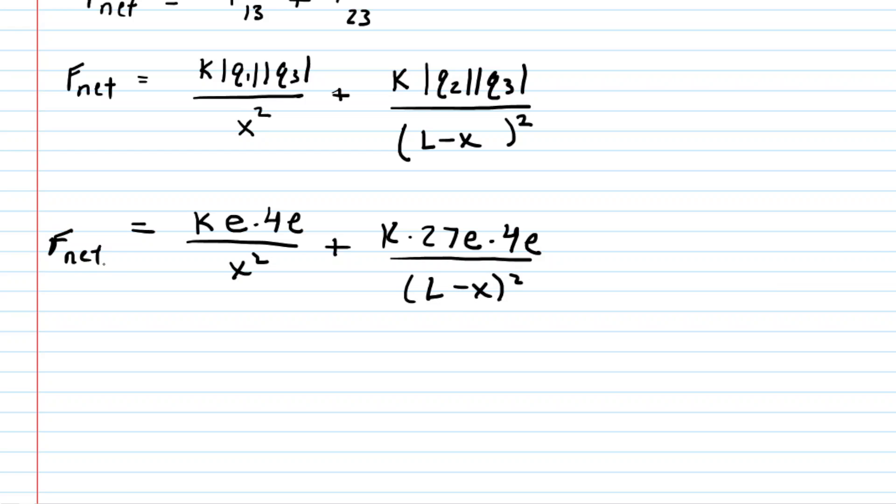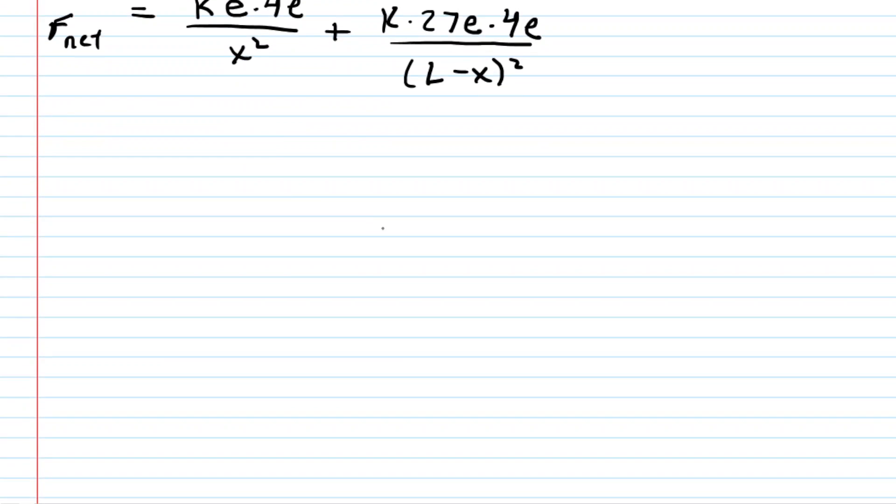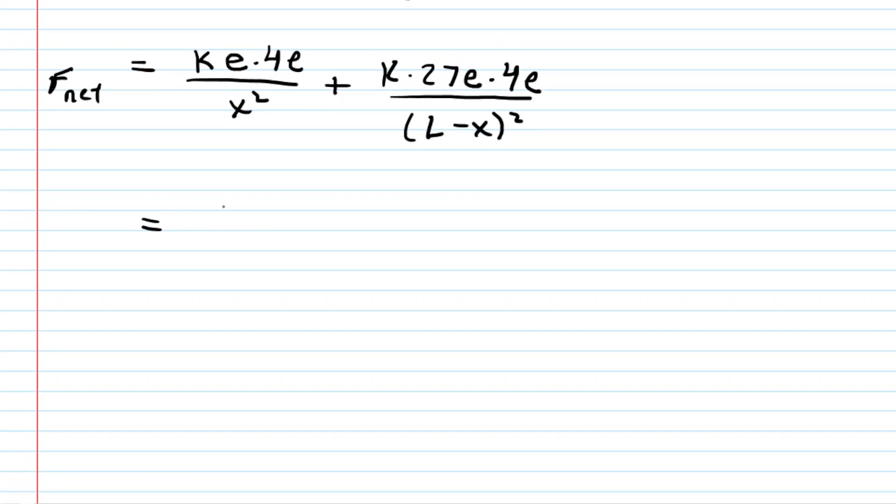We can simplify it a little bit further by multiplying out the numerators. So for example, in the first numerator, you're going to have 4k multiplied by e squared. And then in the second numerator, we'll have to do 27 times 4, which is of course 108. So that will become 108ke squared. And then that is over the L minus x squared. So this is looking a little bit nicer.